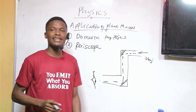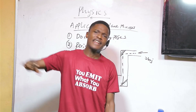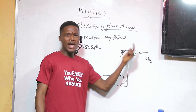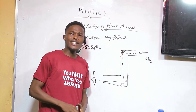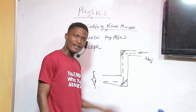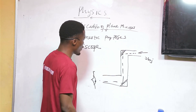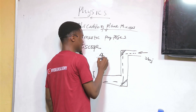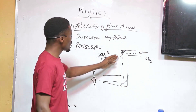You see something like this in submarines. If a submarine is inside the water and wants to see what is at the surface, it will usually use a periscope. Now, one question they can ask you in exams is: what is the angle between the two mirrors in a periscope? The answer is 45 degrees.